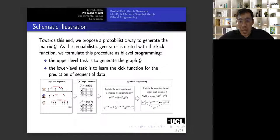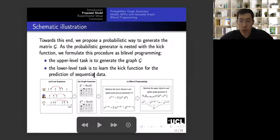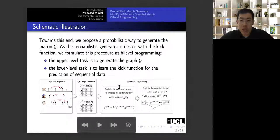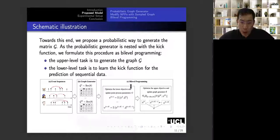So towards this aim, we propose a probabilistic model to generate the latent graph G. As this generator is nested with the kick function, it is actually nested to each other. So we use a bi-level programming technique to deal with these two tasks at the same time. This figure is a schematic illustration of our proposed work. The input is multiple event sequences. And after that, our graph generator generates a bunch of graphs. And these graphs are used to indicate the mutual influence of event types. And based on that, we use bi-level programming to learn the model parameters of the neural point processes.